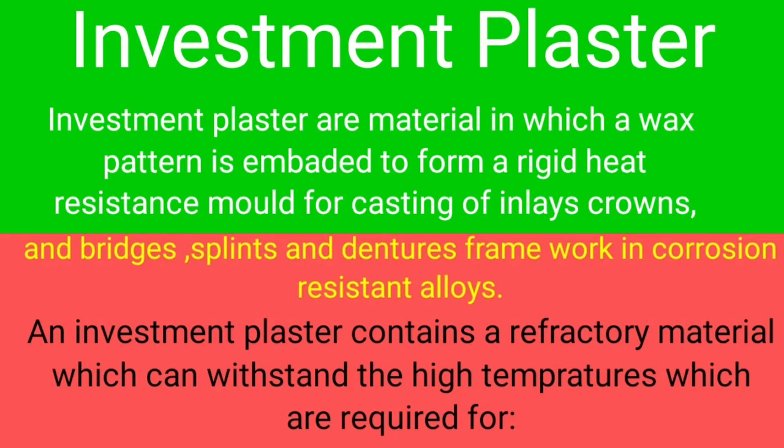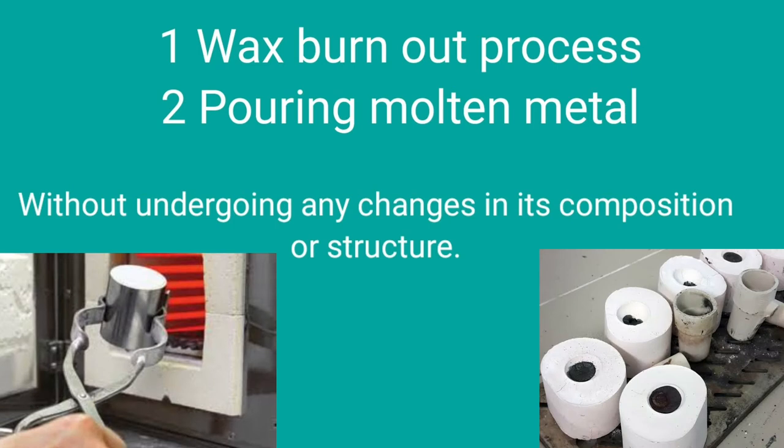An investment plaster contains a refractory material which can withstand the high temperatures required for: Number 1, the wax burnout process, and Number 2, pouring the molten metal — without undergoing any changes in its composition or structure.